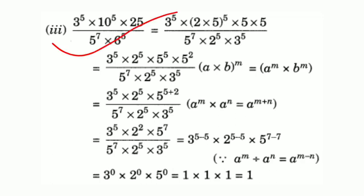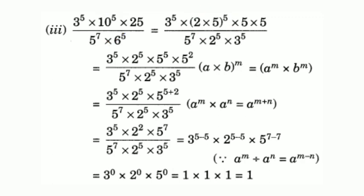Last question: simplify 3 raised to 5 into 10 raised to 5 into 25, divided by 5 raised to 7 into 6 raised to 5. On the numerator, 3 raised to 5 stays the same. 10 raised to 5 is written as 2 into 5, all raised to 5. 25 is written as 5 squared. In the denominator, 5 raised to 7 stays the same, and 6 can be written as 2 into 3, all raised to 5.